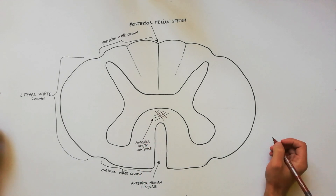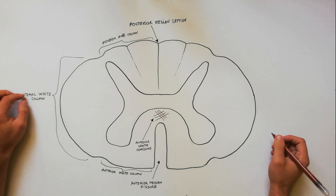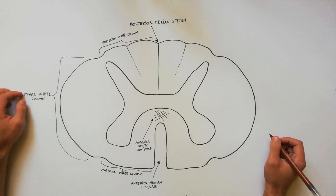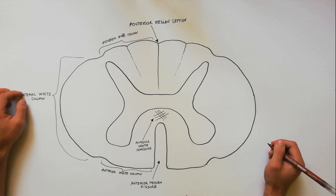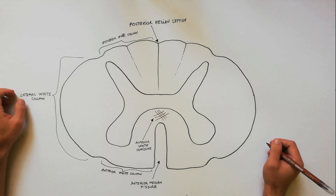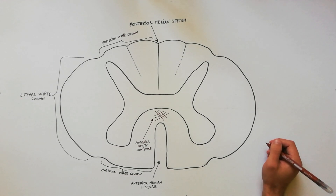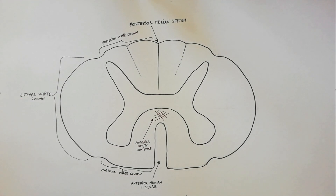Each white column is made up of tracts, which are either ascending or descending. The tracts are defined as collections of nerve fibers within the central nervous system which have the same origin, course, and termination.